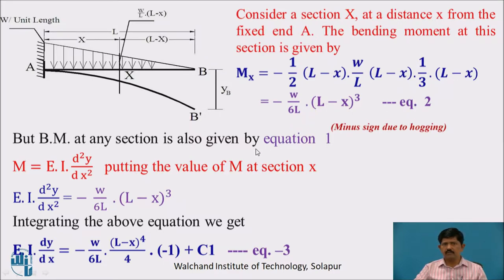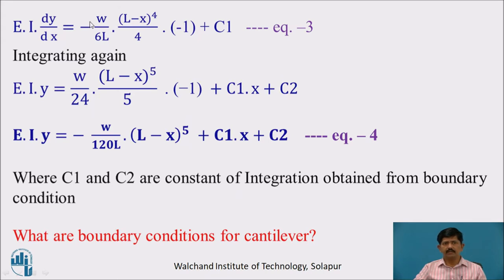We know the bending moment, and from equation 1: M = EI·d²y/dx². Substituting the moment, EI·d²y/dx² = −W/(6L) × (L − x)³. Integrating once: EI·dy/dx = W/(6L) × (L − x)⁴/4 × (−1) + C₁, where C₁ is the constant of integration (equation 3). Integrating again: EI·y = W/(24L) × (L − x)⁵/5 × (−1) + C₁x + C₂, giving EI·y = −W/(120L) × (L − x)⁵ + C₁x + C₂, where C₂ is the constant of integration.